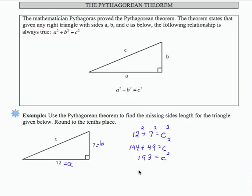Then what I'm going to do to determine the value of c is I'm going to take the square root of both sides. When I do that, the c squared becomes c, and 193 becomes the square root of 193.